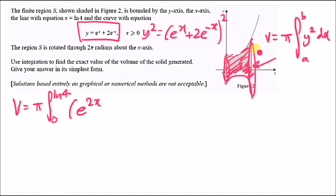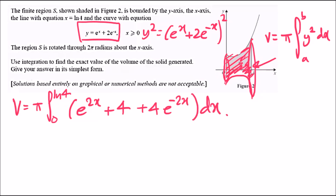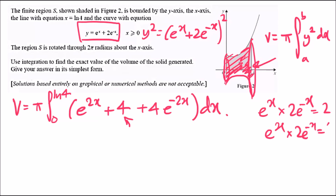Expanding y²: e^x × e^x = e^(2x). Then e^x × 2e^(-x) — the powers cancel, leaving 2, and you do it twice, giving 4. Finally, 2e^(-x) × 2e^(-x) = 4e^(-2x). So the expansion is e^(2x) + 4 + 4e^(-2x). That's how we get the 4 in the middle.